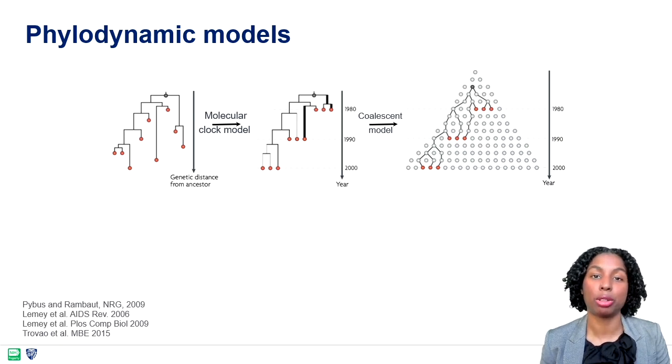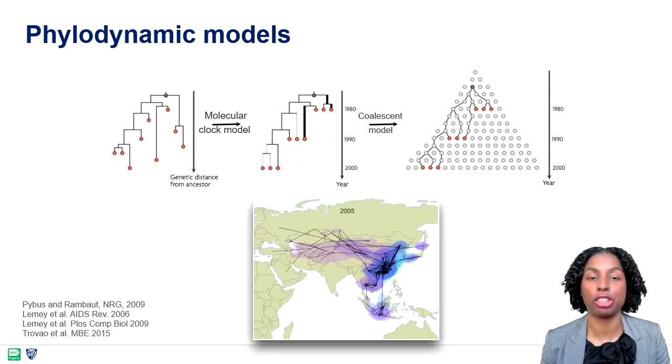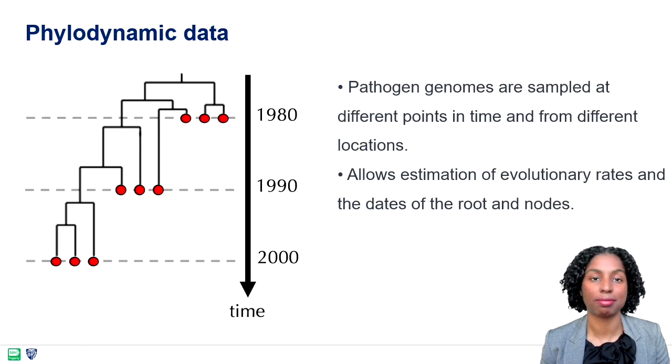The final layer that we will consider is the spatial information, which will be covered in the next sessions. These types of inferences rely on phylogenetic data or heterochronous data, meaning that pathogen genomes are sampled at different points in time and from different locations. This allows the estimation of evolutionary rates and of the dates at the nodes of the phylogenetic tree.